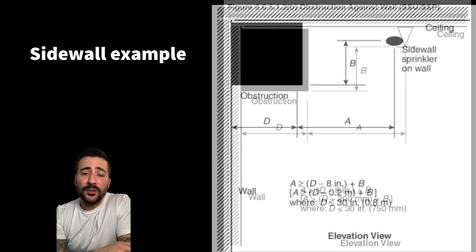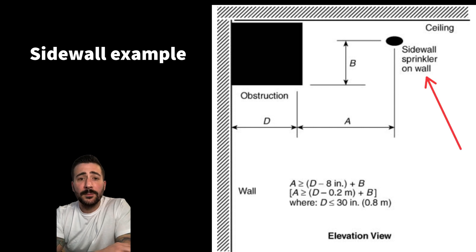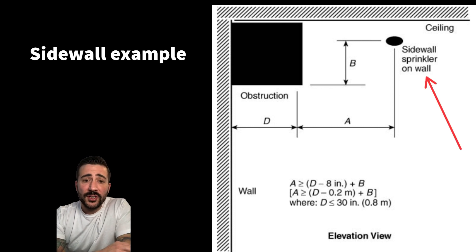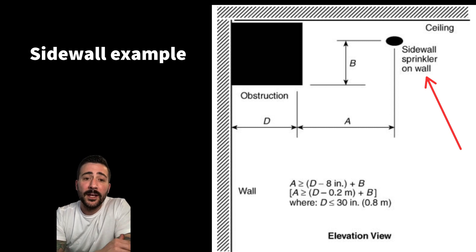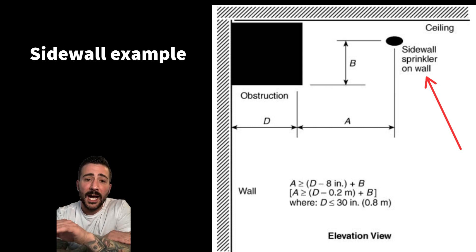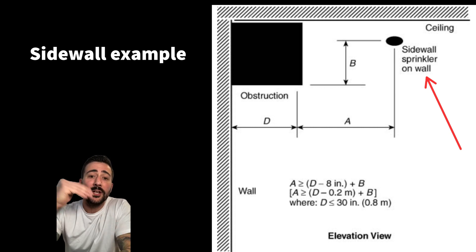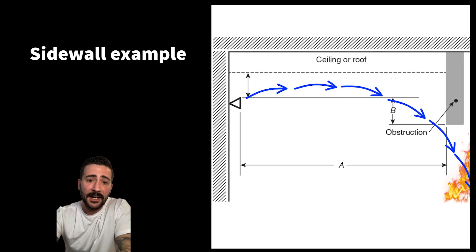If we are going to use the Soffit Rule for one of the available sidewalls, it is for obstructions against a wall located on the same wall as the sprinkler. This is not to spray under obstructions across from the sidewall. If you're trying to spray under an obstruction located on the opposite side of the sidewall, we're going to use the Beam Rule for that specific head.